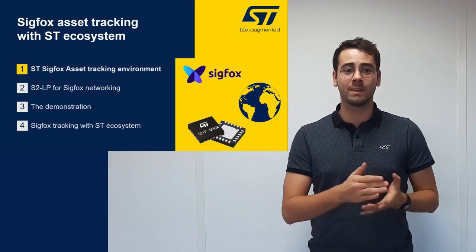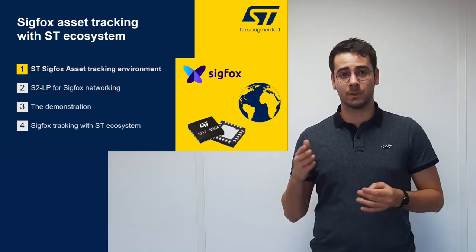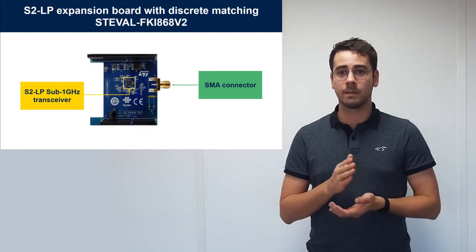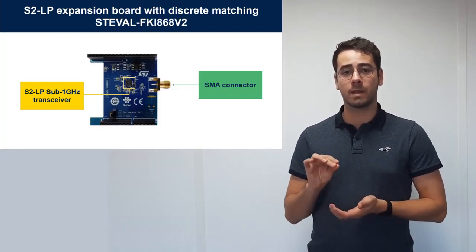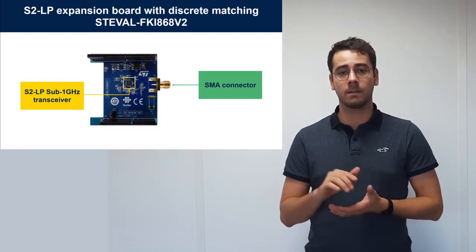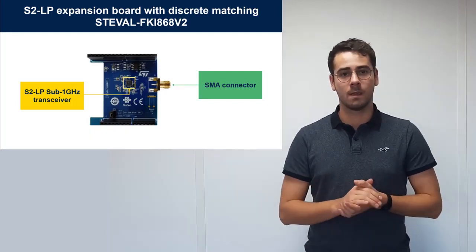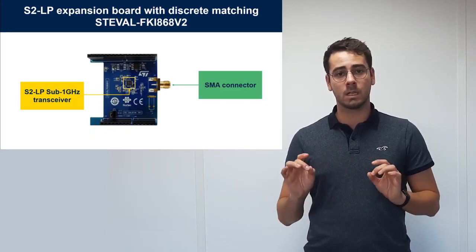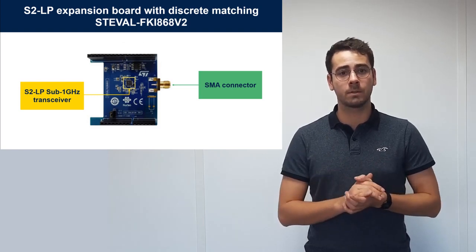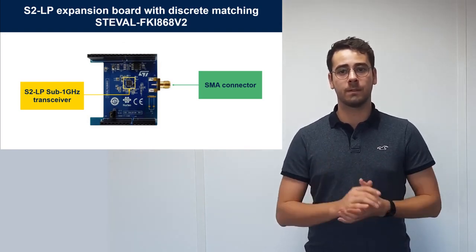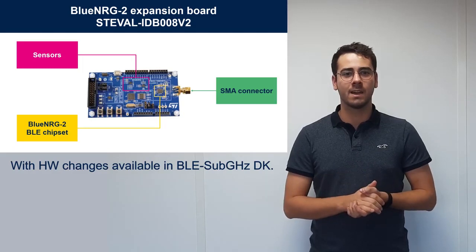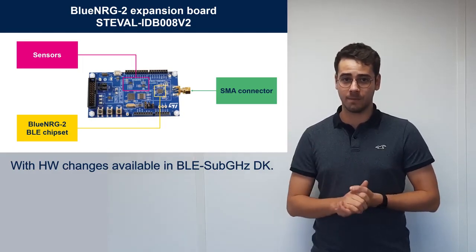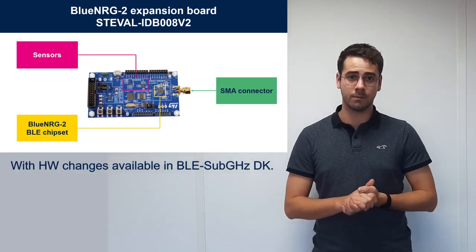First, I will show you what I need to complete my demonstration. We will need our S2LP evaluation board named STEVAL-FKY868B2. S2LP is an RF transceiver that is state-of-the-art in terms of power consumption and RF performances. On the other side, we need a BlueEnergy-2 evaluation board named STEVAL-YDB008B2.